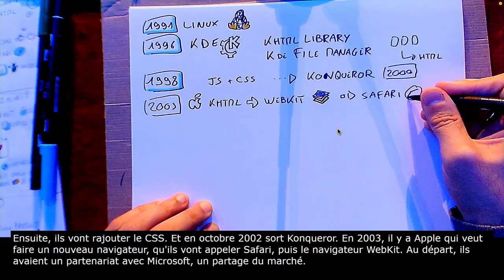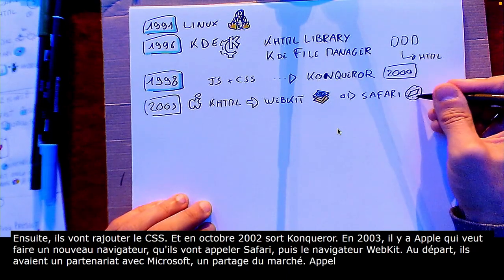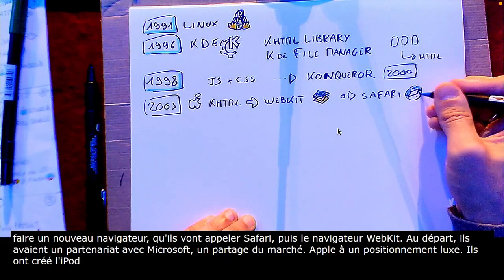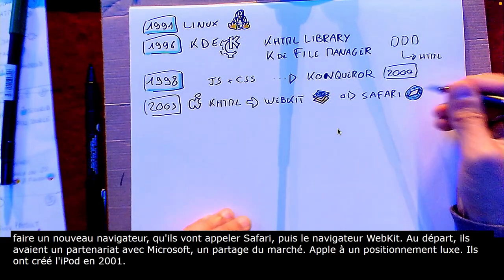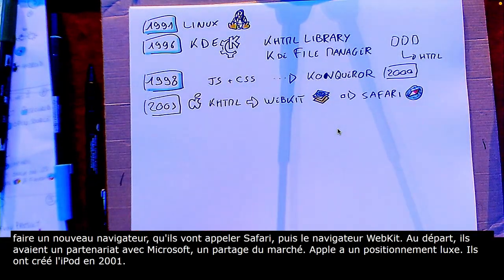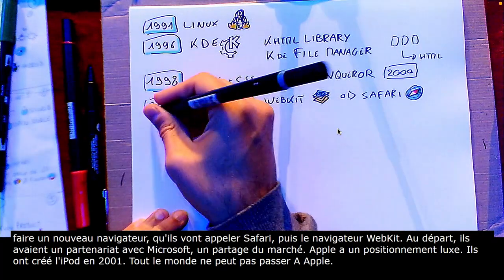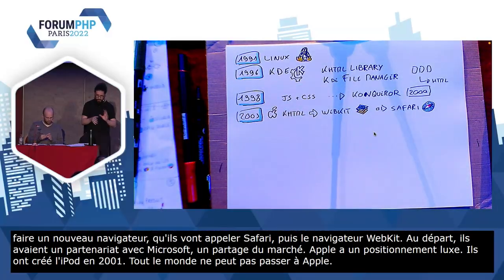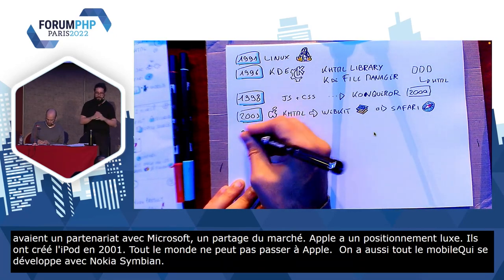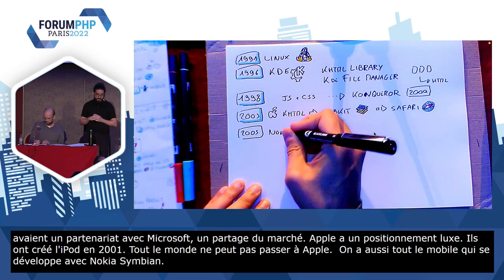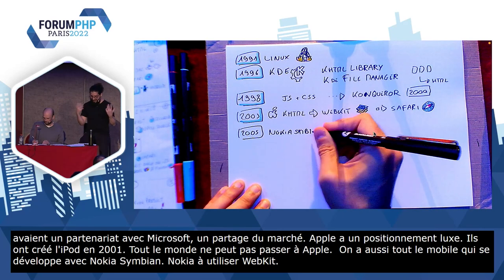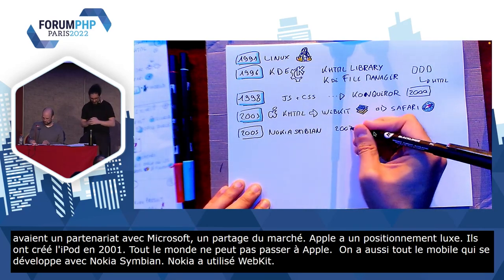Apple a un positionnement luxe, ils ont créé l'iPod en 2001 qui leur a permis de se rendre compte que peut-être que le mobile ça serait le turfu. J'ai parlé de l'iPod, on a aussi tout le mobile qui se développe avec Nokia, à l'époque c'était Nokia avec Symbian. Et Nokia se dit, ça serait bien d'avoir un bon navigateur, on va utiliser WebKit. Ensuite, il y a l'iPhone 2 qui sort en 2007 — ça serait bien d'avoir un bon navigateur, on va utiliser WebKit. Ensuite, en 2008, il y a Android qui sort — on va utiliser WebKit.